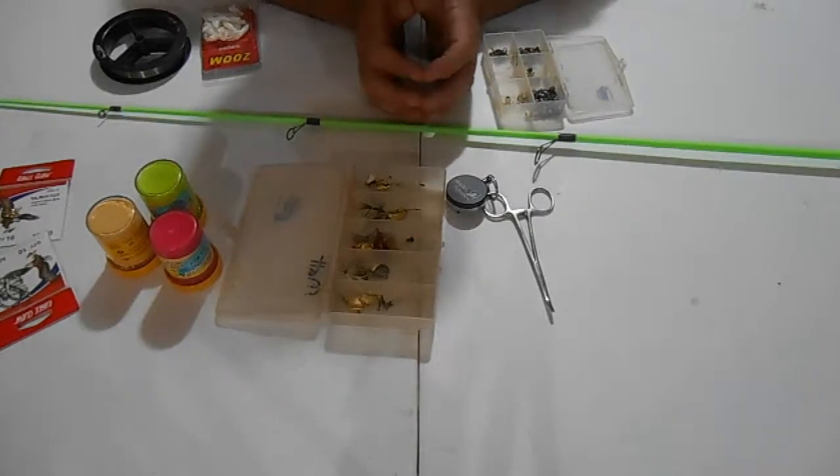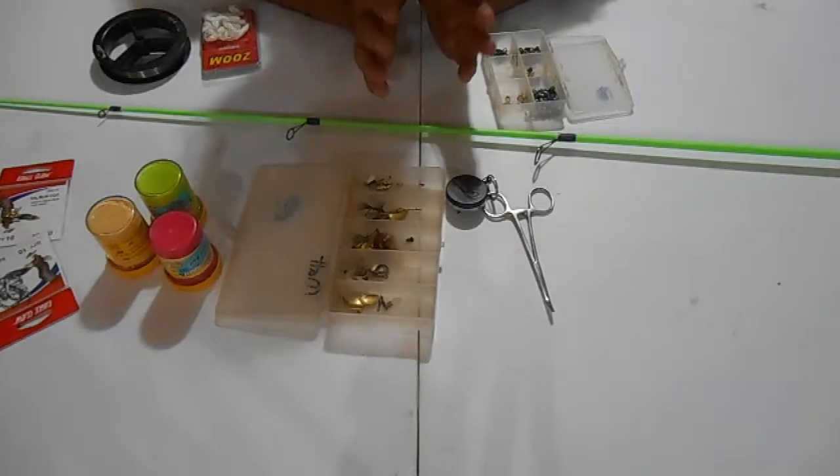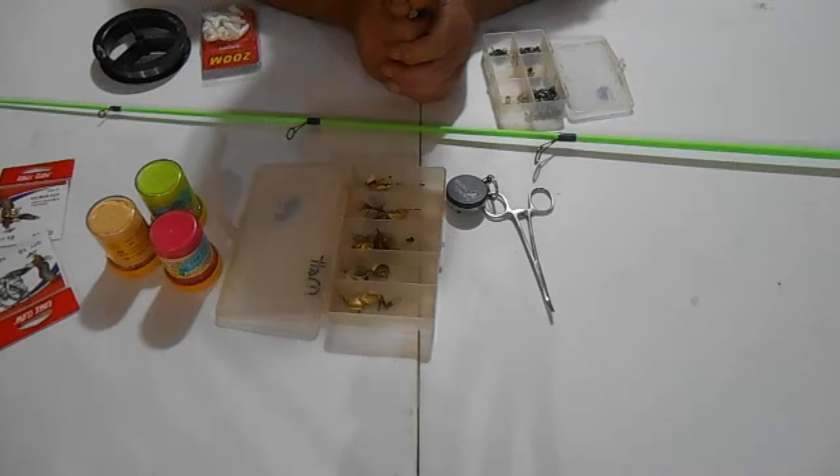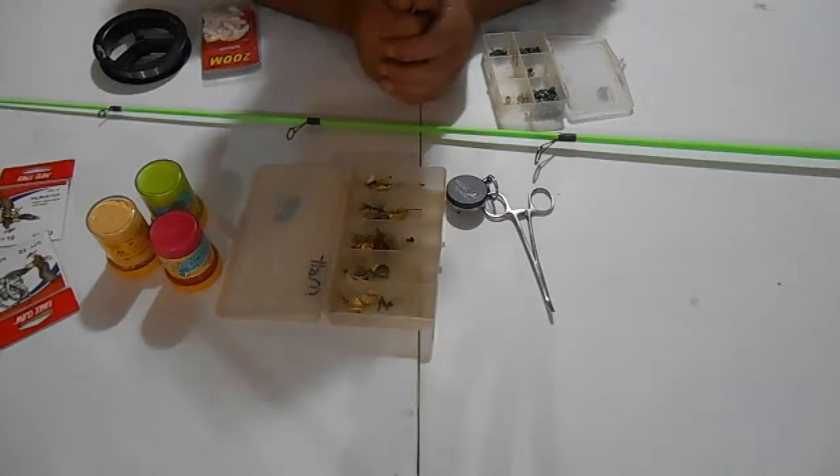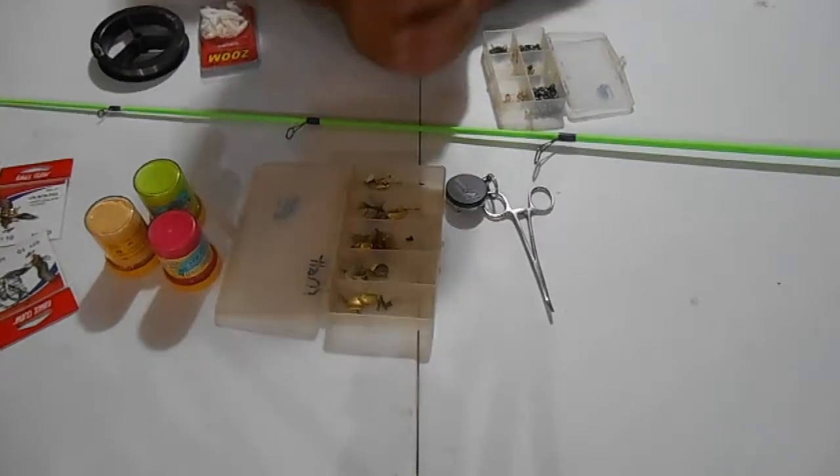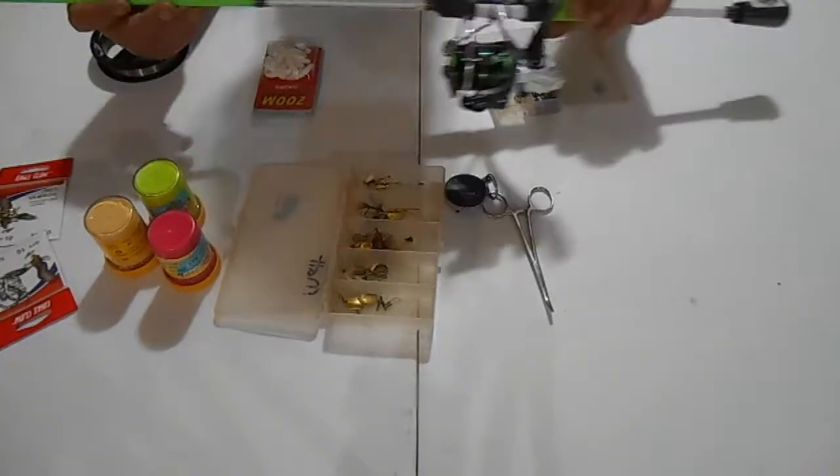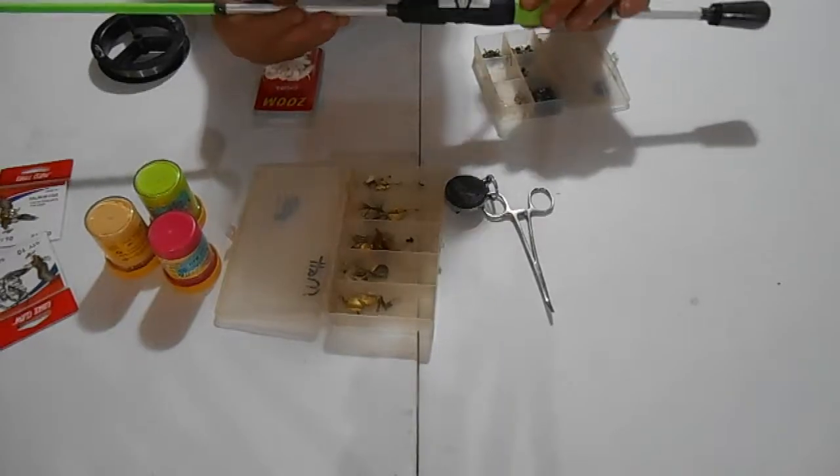As far as rod and reels, you don't have to have anything fancy. You can go to the local sporting goods store and pick up something. I mean if you don't have nothing but a Mickey Mouse rod take a Mickey Mouse rod. Take your kids fishing. But I picked up this little rod the other day and there's not a whole lot to it. It's just a little combo. In fact I ain't even put line on it yet.